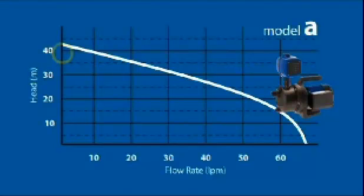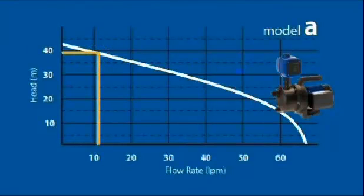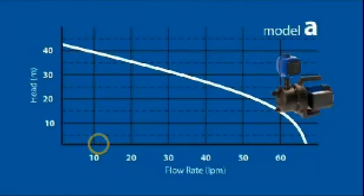On the graph, find 39 metres of head on the vertical axis and run an imaginary line across the graph. At the point your line crosses the pump curve, draw another line directly down the graph to the flow rates along the horizontal axis. This is the flow rate your pump can deliver when working against the pressure you have calculated. Is the pump able to produce the flow rate required? In the case of model A, the answer is no.